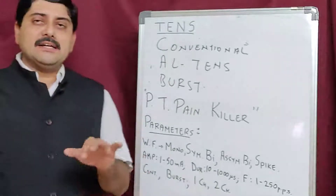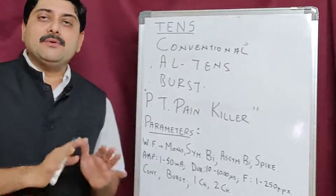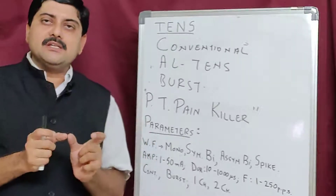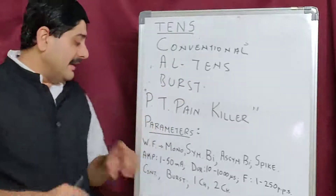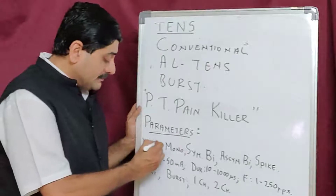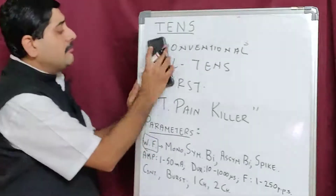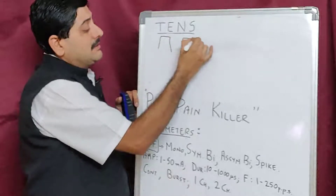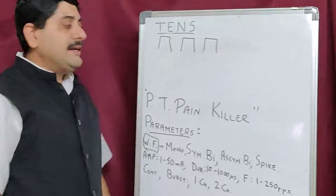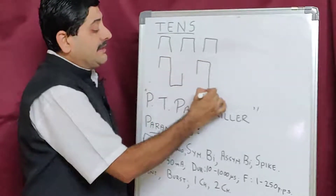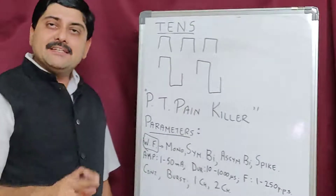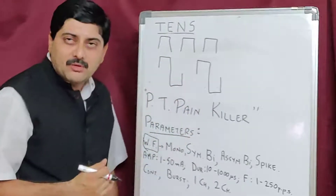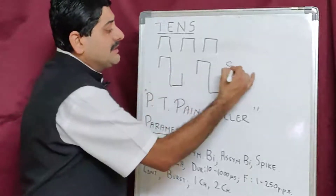Now let us understand the parameters confined to TENS. Parameters are the units used to define a particular current. The waveform for TENS can be monophasic — having a single phase. It can also be biphasic symmetrical, meaning the same current magnitude above and below the baseline, making it symmetrical.